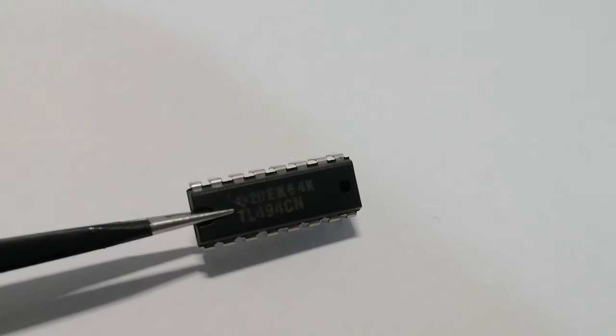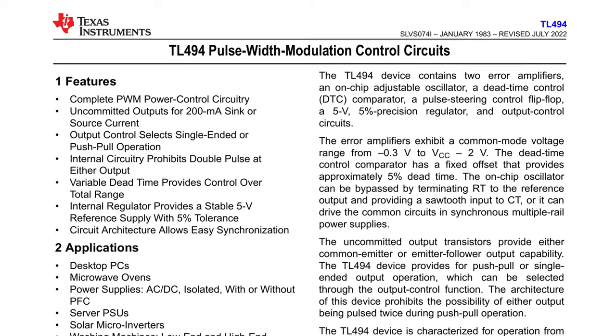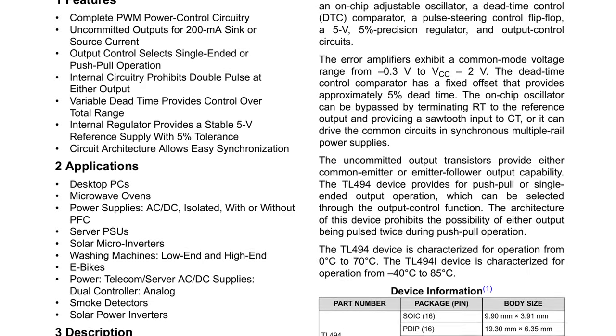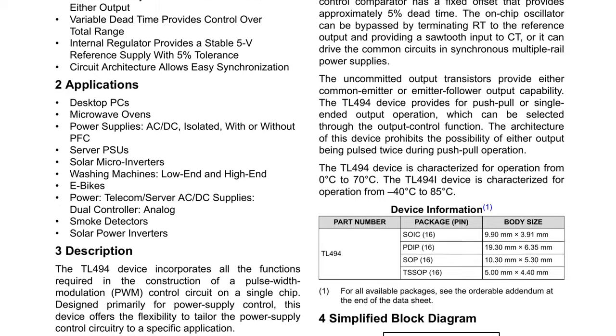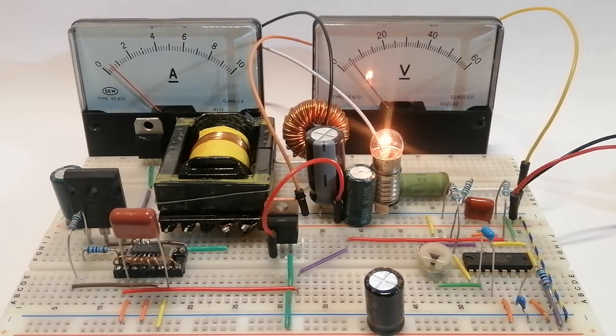In this video I want to use the TL494 as a basic controller to control voltage. This IC is a very generic and very simple PWM controller. So let's quickly look at how it works so that then we can build a circuit and test it.